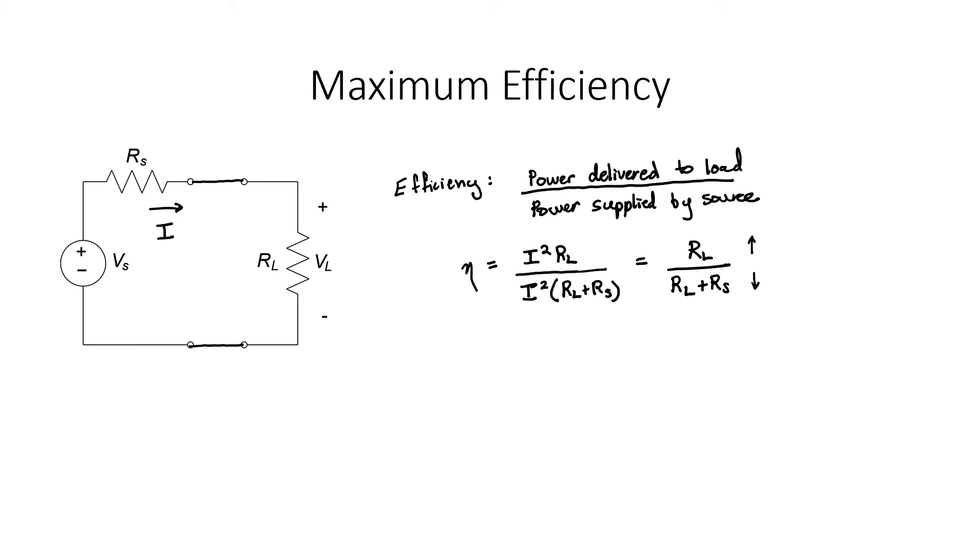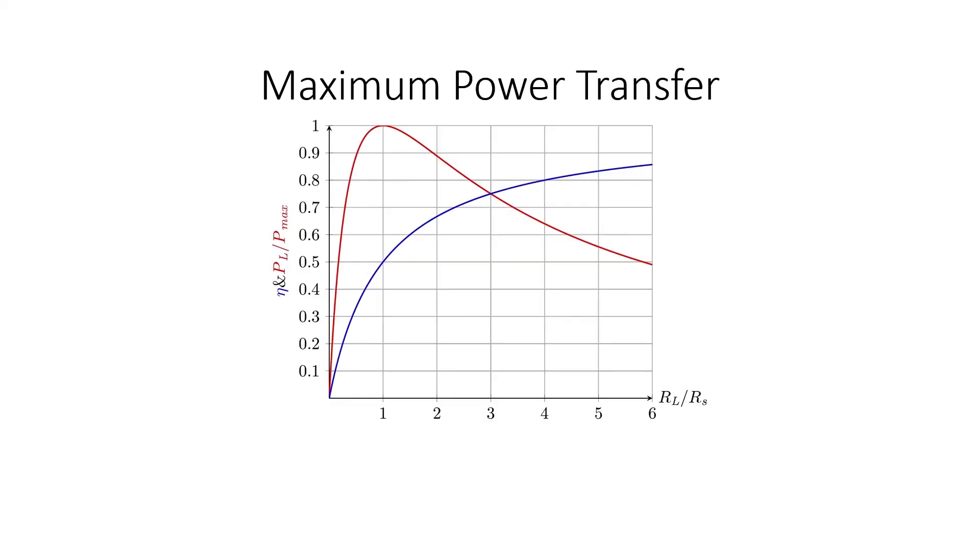If we use a large load resistor though, we're not going to transfer maximum power. On the x-axis here, we've plotted the ratio of load resistance to source resistance. As you can see, the power transfer is maximized when this ratio is 1, or effectively when the load resistance equals the source resistance. But the efficiency reaches its maximum point, that is 1, at an infinite load resistance.